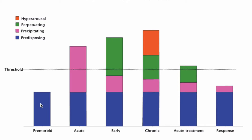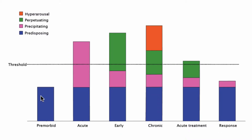The model looks at different components that can predispose us to insomnia, trigger insomnia, and perpetuate or keep it going. Starting from the left side of the diagram, the pre-morbid section refers to our biological predisposition to being good or bad sleepers. Some of us are good sleepers, some are not so good. But it would be very rare for any of us to be above the threshold for insomnia based on genetics alone.